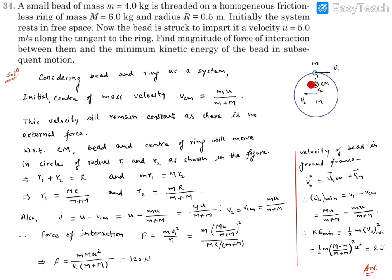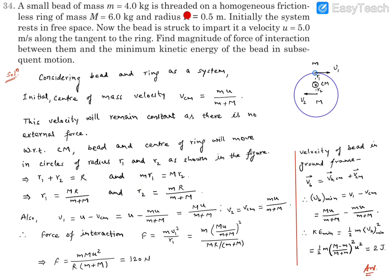Since the center of mass is an inertial frame, we can measure the interaction force on either the bead or the ring. Measuring on the bead: since it moves in a circle of radius r1 with respect to the center of mass, it must be subjected to a centripetal force F = m·v1² / r1. This centripetal force is provided by the ring, so it equals the force of interaction. Substituting v1 and r1 and simplifying, the result is F = mMu² / [R(m + M)].